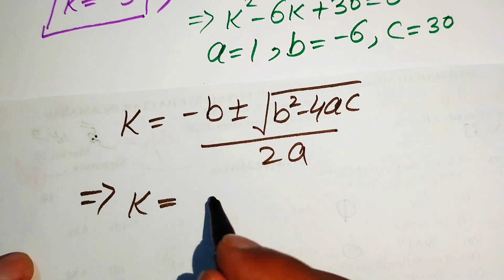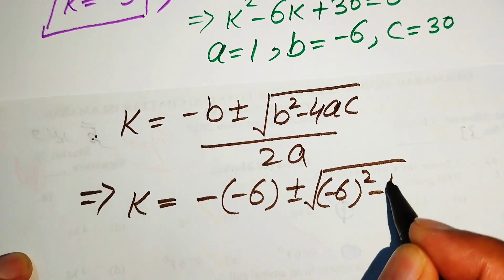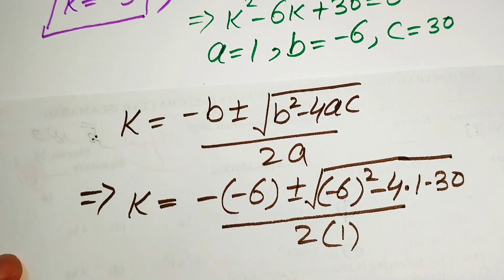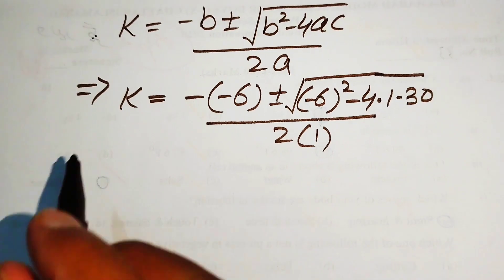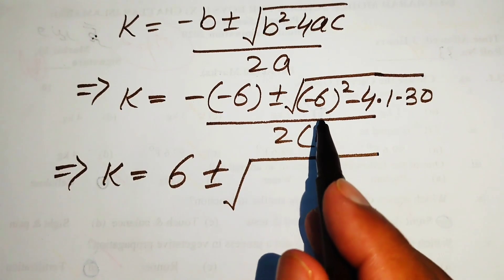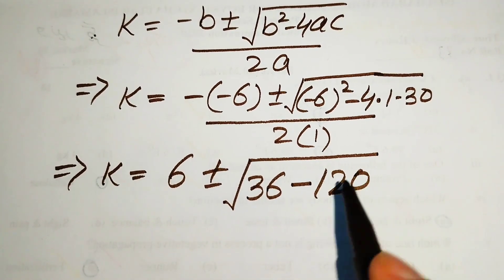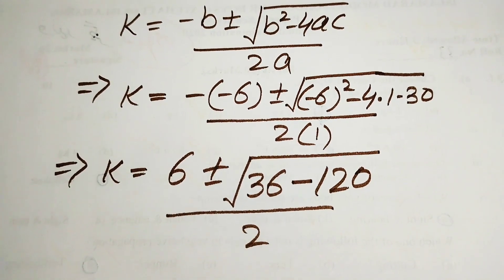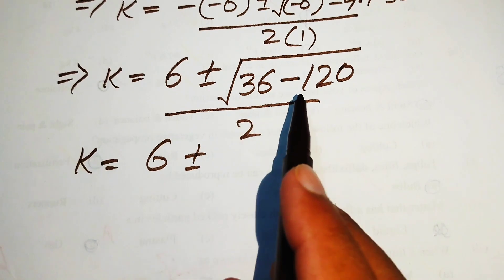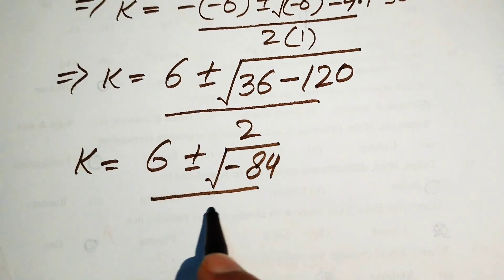Substituting the values, k equals minus(minus 6) ± √((minus 6) squared minus 4 times 1 times 30) all divided by 2 times 1. This simplifies to k equals 6 ± √(36 minus 120) divided by 2, giving k equals 6 ± √(minus 84) divided by 2.